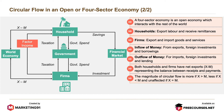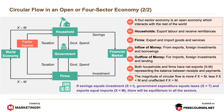The magnitude of circular flow is more if X is greater than M, less if X is lesser than M, and unaffected if X equals M. If savings equals investment (S = I), government expenditure equals taxes (G = T), and exports equal imports (X = M), there will be equilibrium in all the sectors.